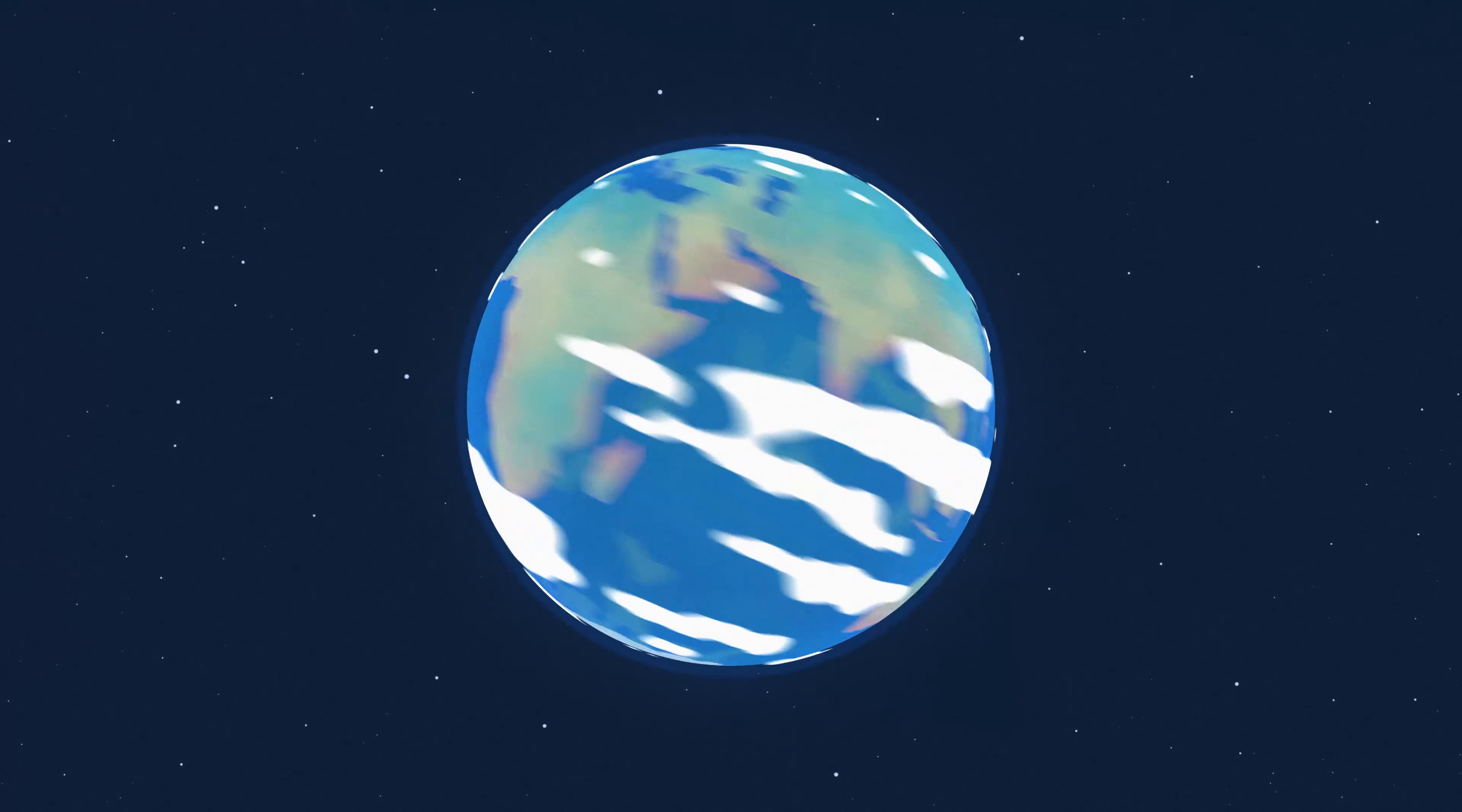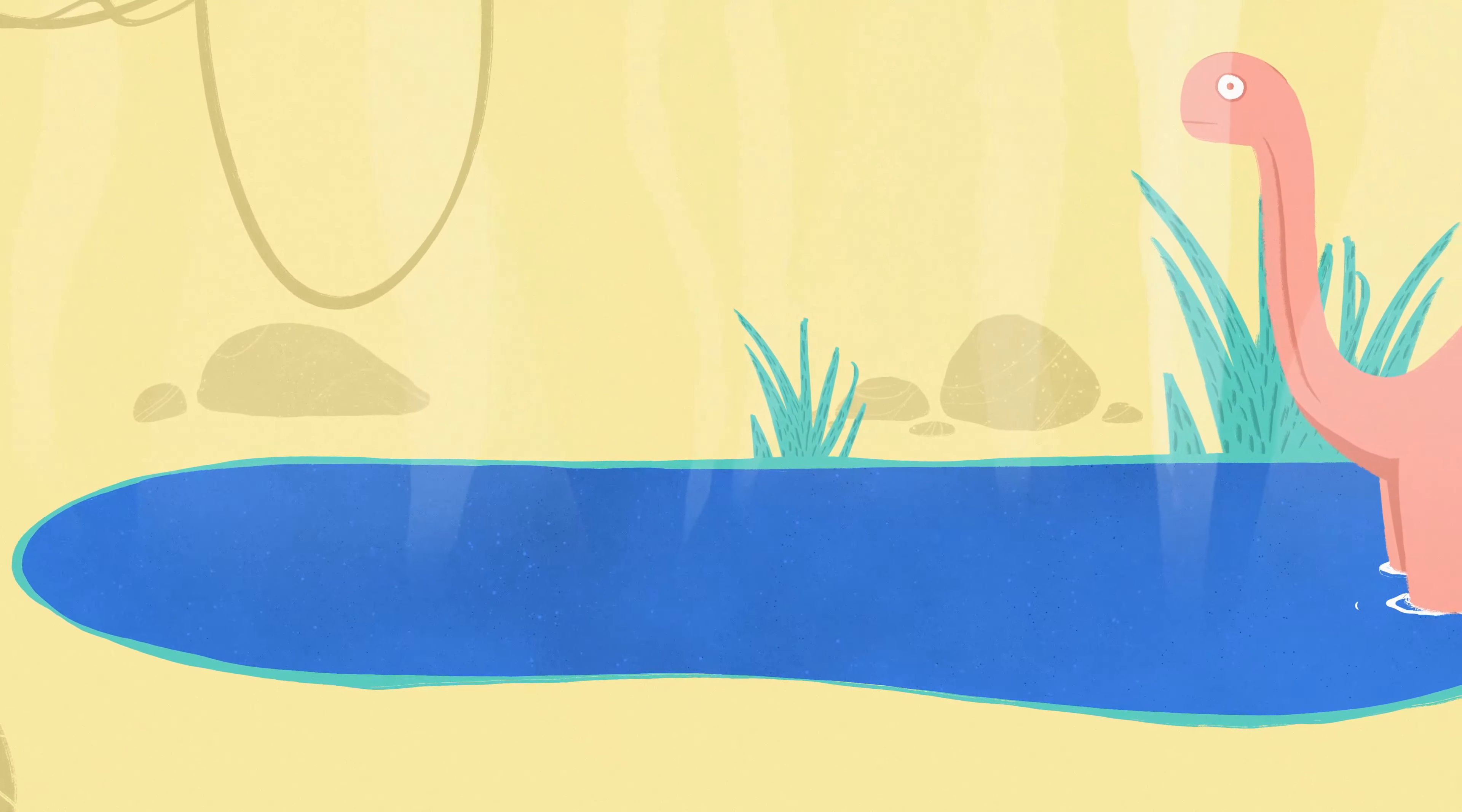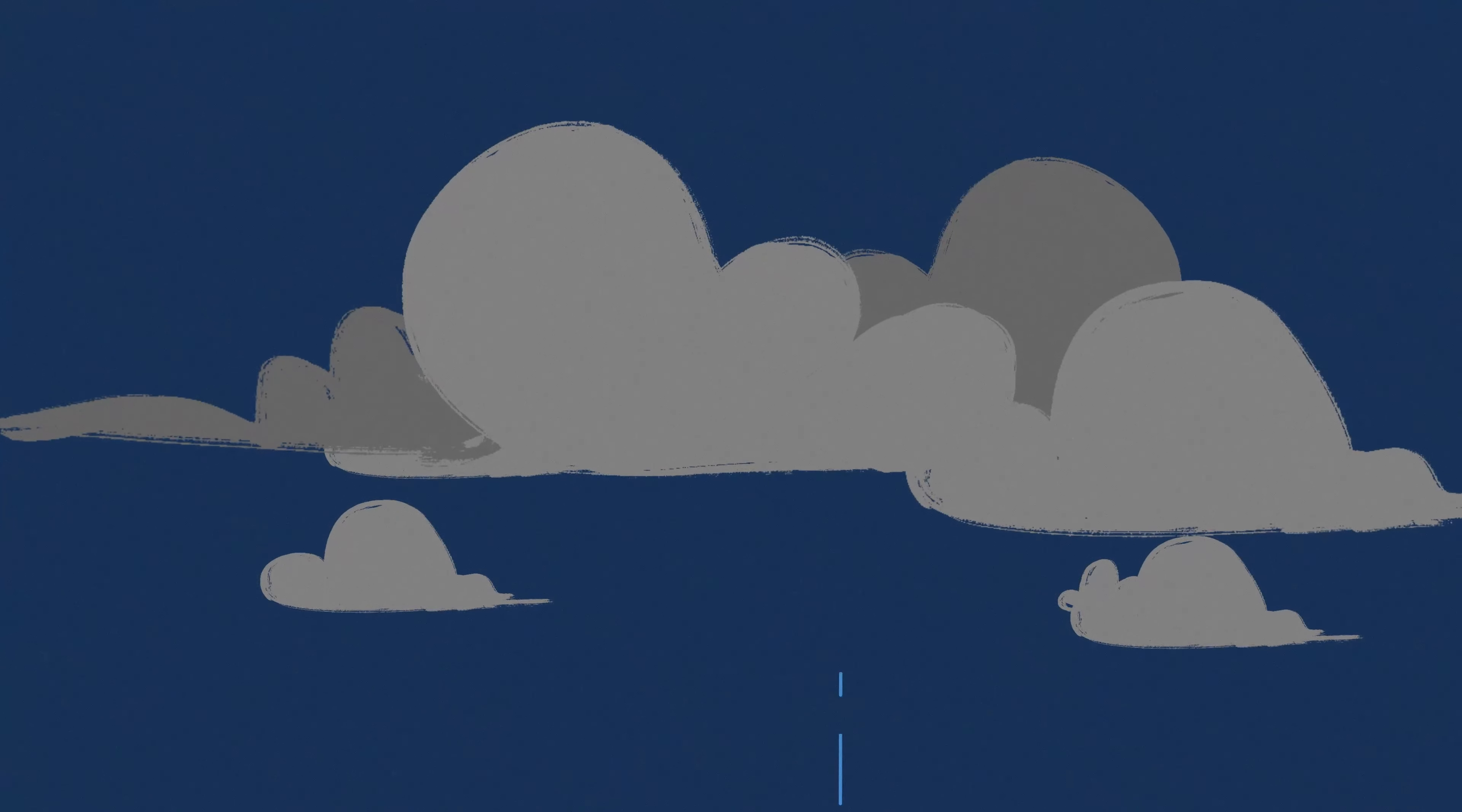Most water on Earth has been here for billions of years, and during that time, any single drop might have moved between different parts of Earth's water budget. Moving from one part of the budget to another, a process known as the water cycle, can happen quickly, like when water evaporates from a lake and moves to the atmosphere. It can also happen slowly, like when water makes its way deep underground.